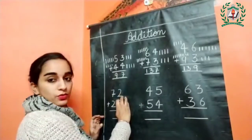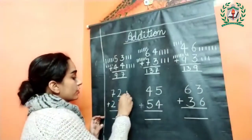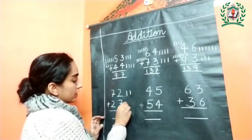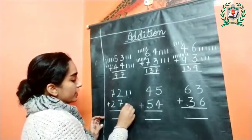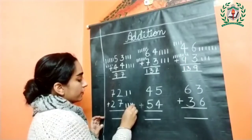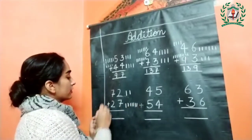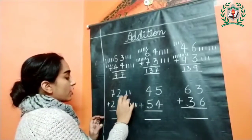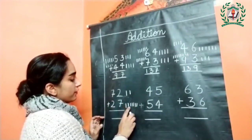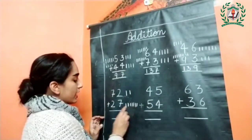This is number two — draw two lines: one and two. Draw seven lines: one, two, three, four, five, six, seven. Then count: two, three, four, five, six, seven, eight, and nine.